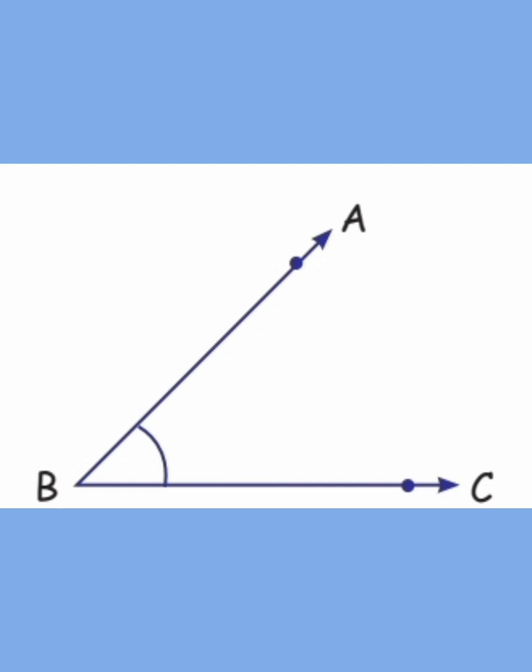A, B, C is the angle. A, B is one line segment. B, C is the other line segment. B is the vertex. A, B and B, C are the arms of the angle.